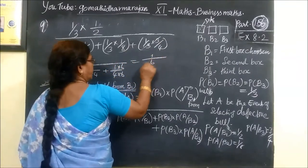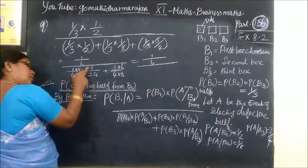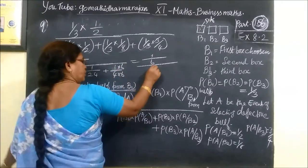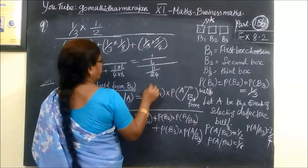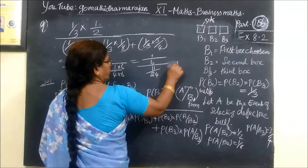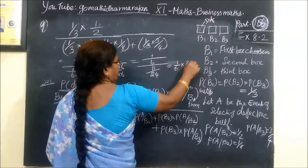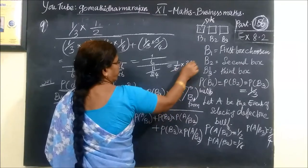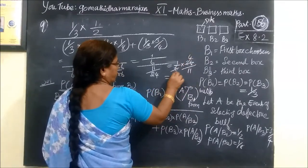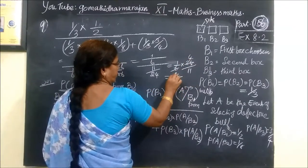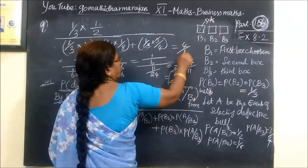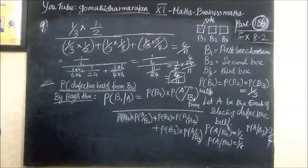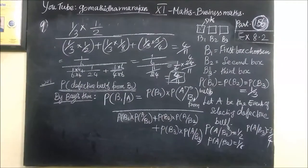So this is equal to 1 by 6, then the whole by 11, so 11 by 24. So this is equal to 1 by 6 into 24 by 11. So 4 by 11. So the answer for this, 4 by 11. So this one is correct.